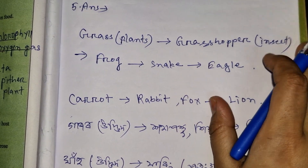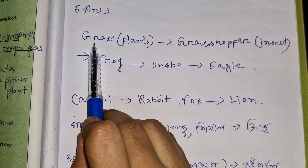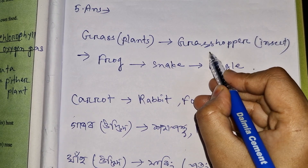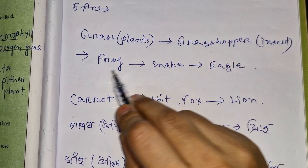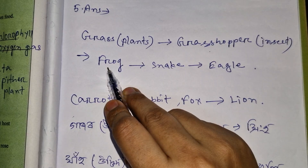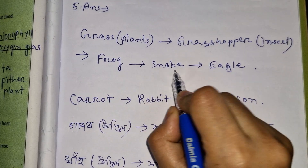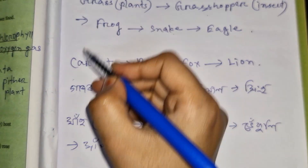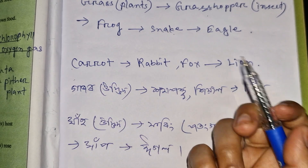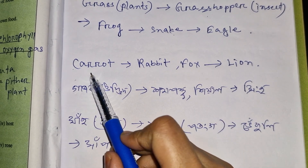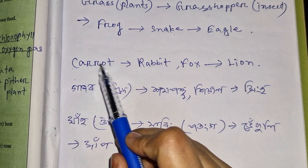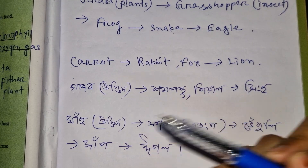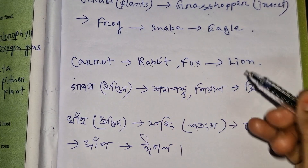A food chain includes: grass, then insects, then frog, then snakes, and finally eagle. These represent a sequence of organisms in a food chain.